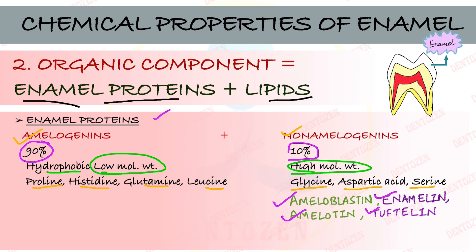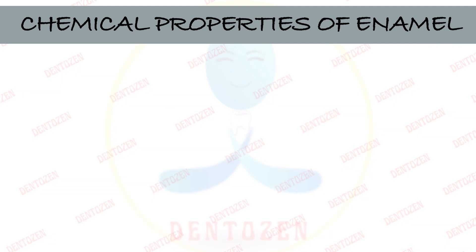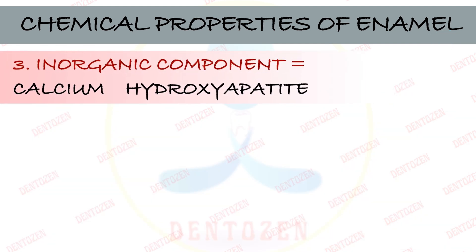Lipids are less than proteins and come from the membranous remnants of Tomes' process of the ameloblast cell. The ameloblast cell forms enamel, and its Tomes' process leaves remnants when it is pinched off — the membrane may remain behind, giving rise to lipids. This happens during amelogenesis, that is during enamel formation.